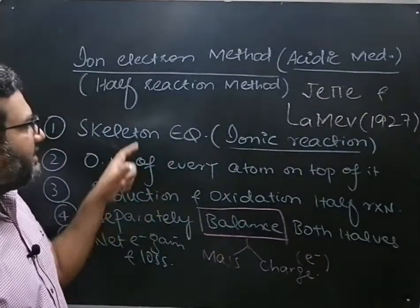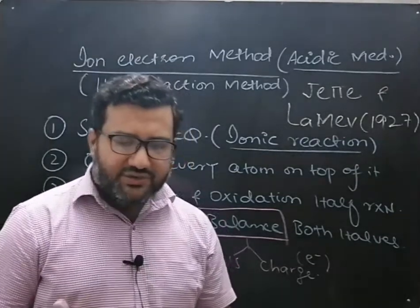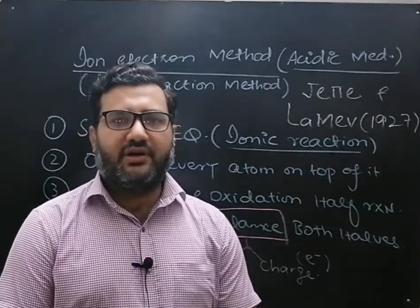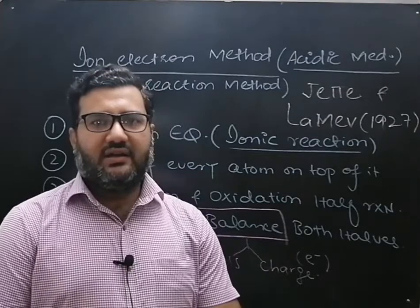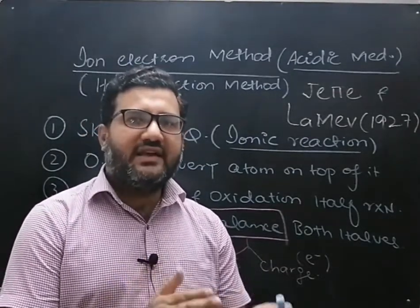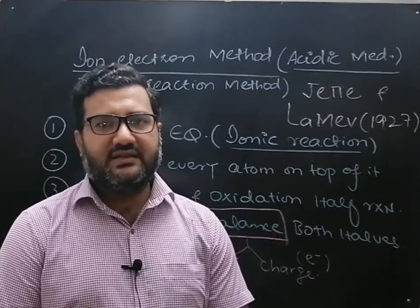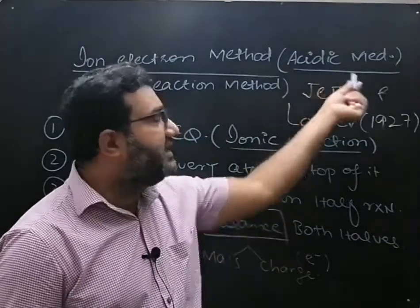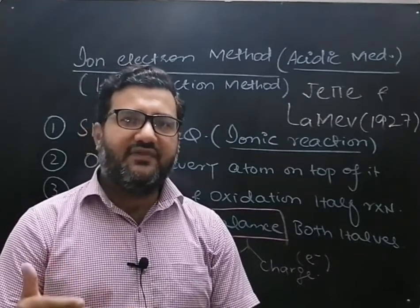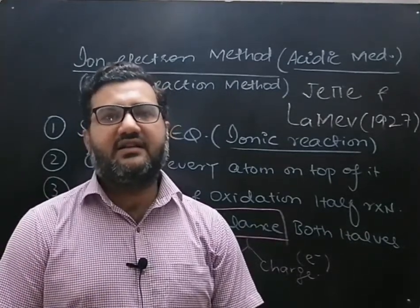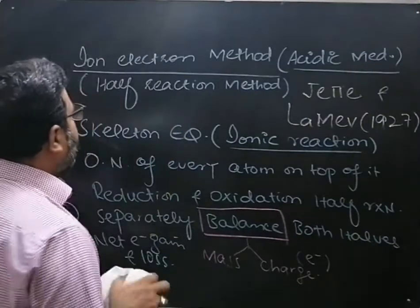These are the rules for balancing an equation by the ion electron method. Regarding how hydrogen and oxygen are balanced: you will add water molecules to the side having the lesser number of oxygen atoms to balance oxygen on both sides. For hydrogen atoms in acidic medium, they are balanced using H⁺ ions — you will add H⁺ to the side of the equation which has the lesser number of hydrogen atoms. Now let us balance an equation using the ion electron method.